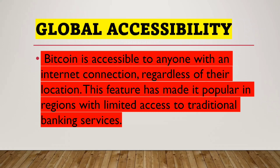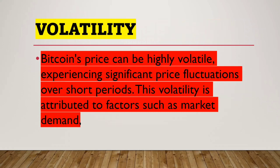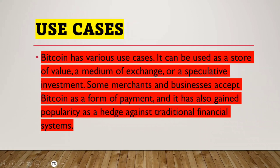Our third point is volatility. Bitcoin's price can be highly volatile, experiencing significant price fluctuations over short periods. This volatility is attributed to factors such as market demand.